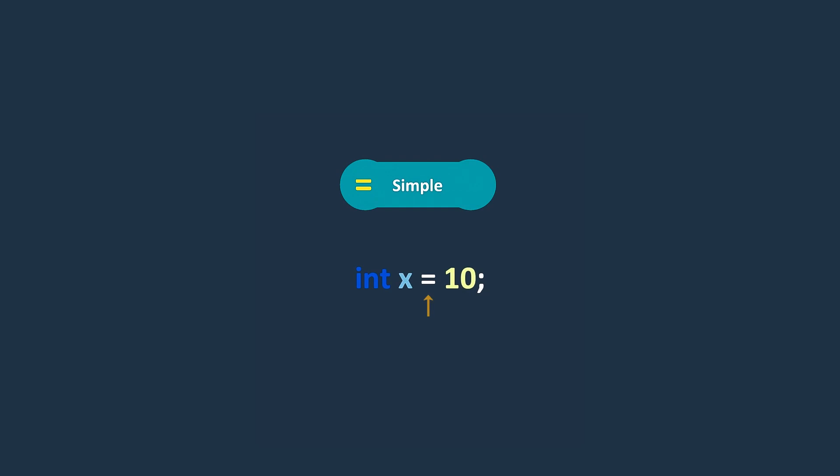The simple assignment operator is used to assign a value to a variable, and you should be familiar with it by now. For example here, it assigns the value of 10 to the x variable.